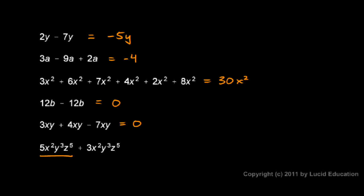Here I have 5x squared y cubed z to the 5th plus 3x squared y cubed z to the 5th. And we look carefully, and we see that the variable part here is exactly the same in both of them. I have an x squared in each one, a y cubed in each one, and a z to the 5th. And those are exactly the same, so they can be combined.